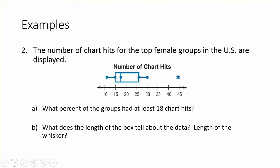Let's look at another box and whisker plot — the number of chart hits for the top female groups in the United States. The median looks to be around 17.5, the lower quartile at about 15, and the upper quartile closer to 26. The minimum value is around 11, the maximum is at 30, and there's an outlier at 45.